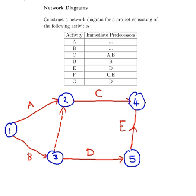So what I'm going to do is join nodes 4 and 5 by the arrow to represent activity E.